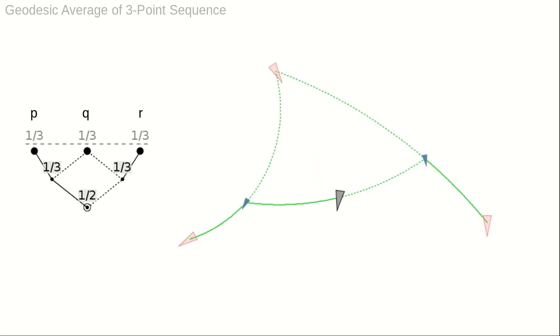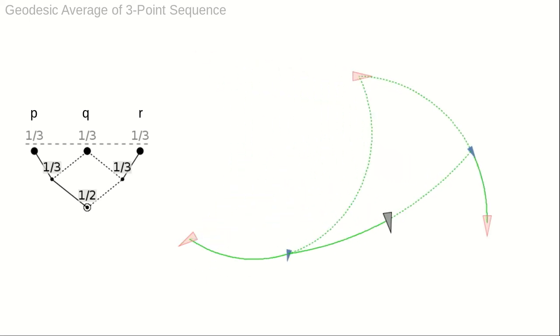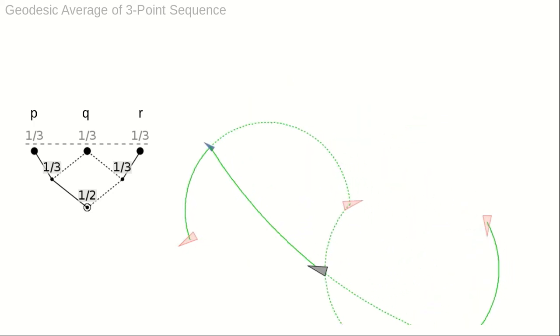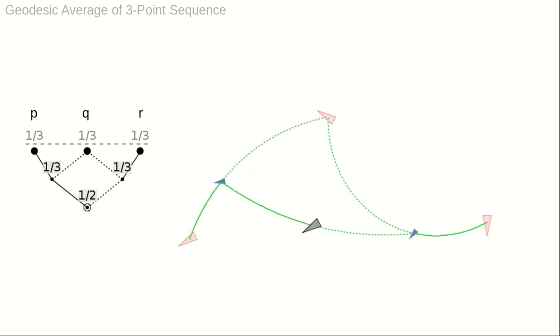In this example, the geodesic average of a three-point sequence is illustrated with weights that originate from the mean. The three points are indicated as red arrowheads. The geodesic average is in grey.